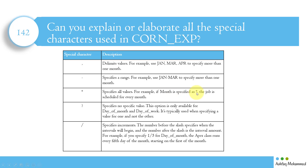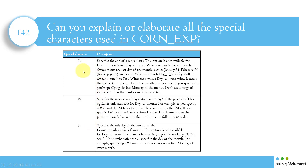The question mark specifies no specific value and is only available for day of the month and day of the week — typically used when specifying a value for one and not the other. The slash specifies increments: the number before the slash is when the interval begins, and the number after the slash is the interval amount. For example, 1/5 for day of the month means the apex class runs every fifth day of the month starting on the first.